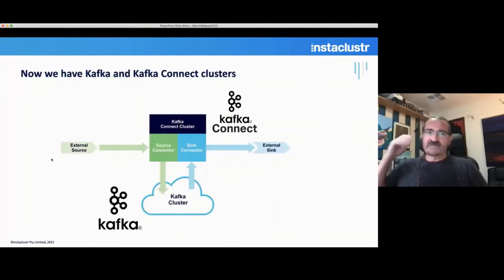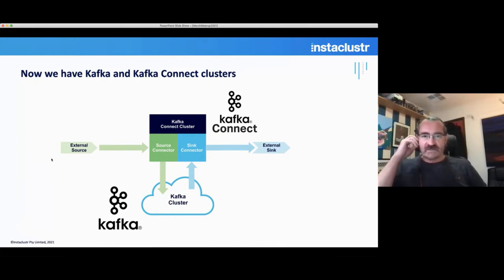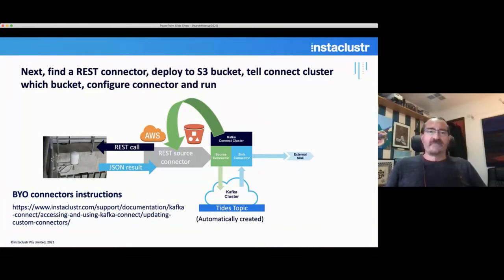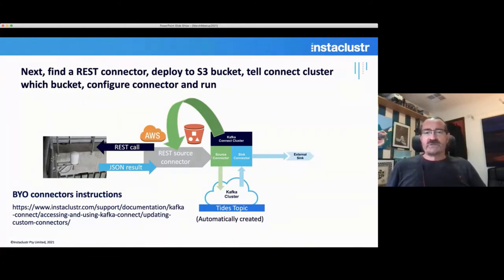This is an architecture diagram of what we're hoping to achieve — we want to get data into the cluster from some external source and eventually shift it into some external sink system. Next we have to find a REST connector, deploy it to an S3 bucket, tell the Connect cluster which bucket it's in, then configure the connector and run it. We have a concept of 'bring your own connector' — we do provide some default connectors, but there's no REST connector by default.